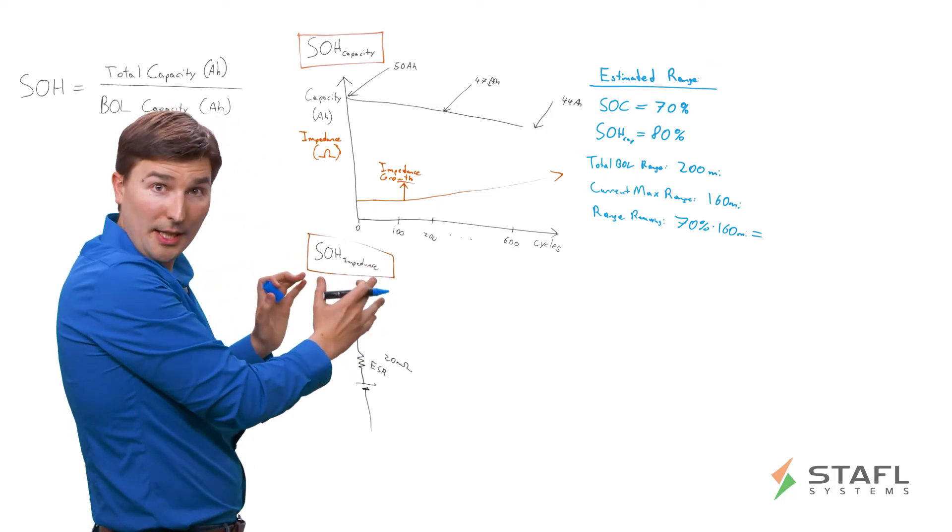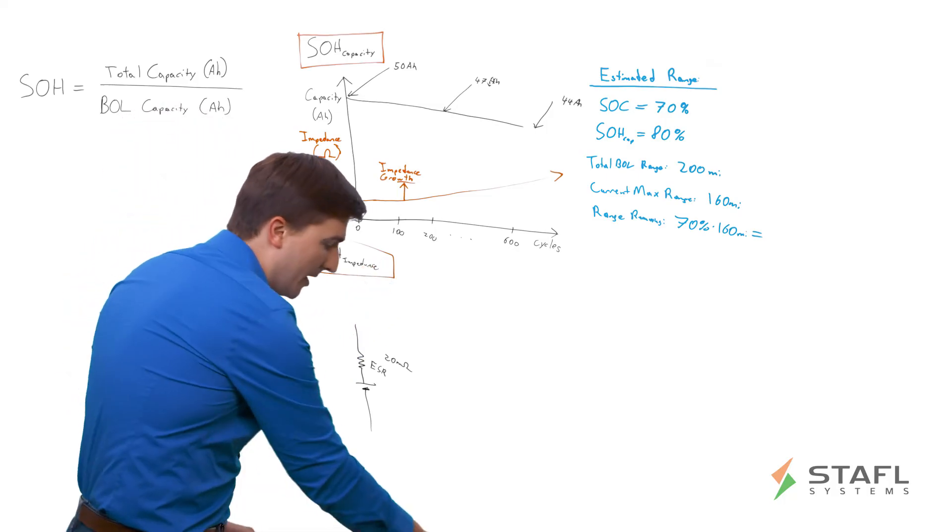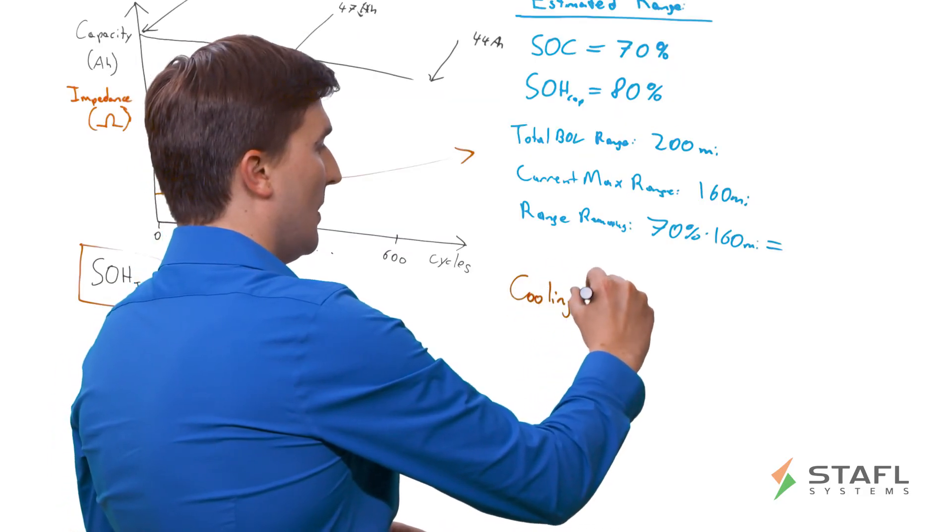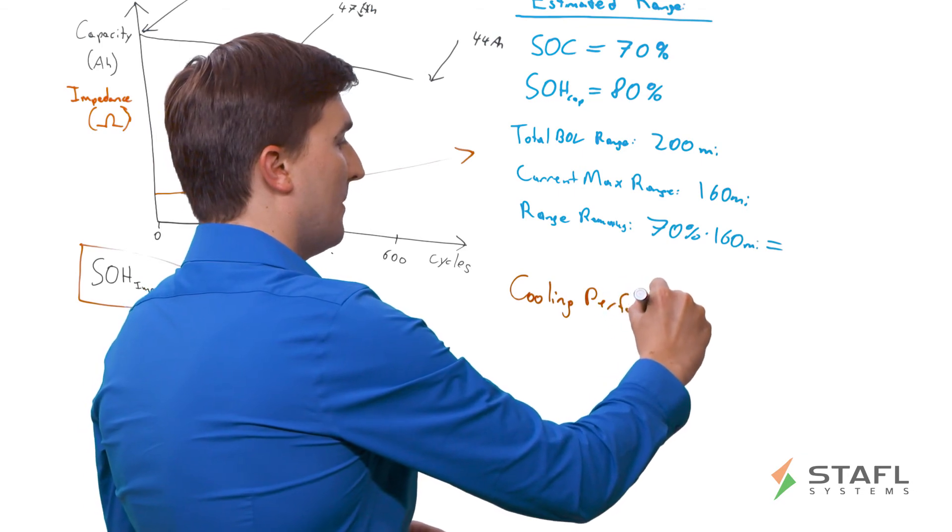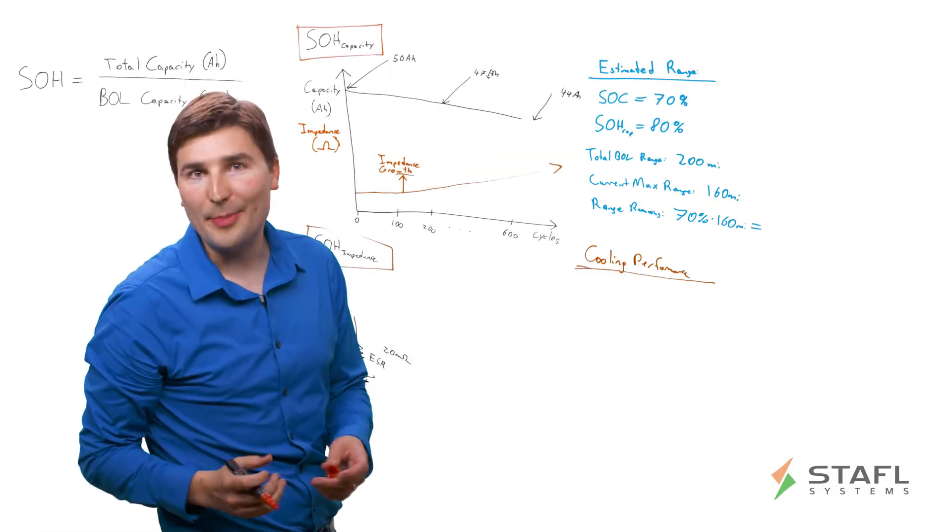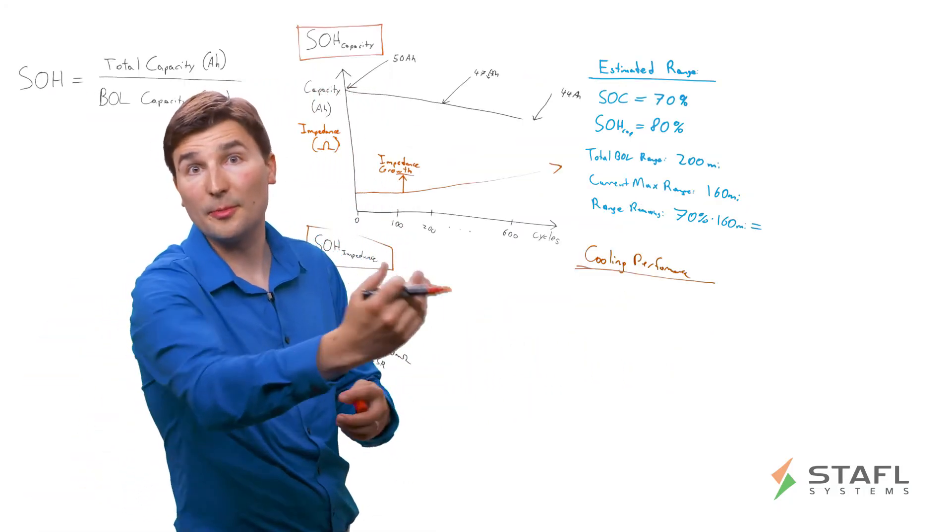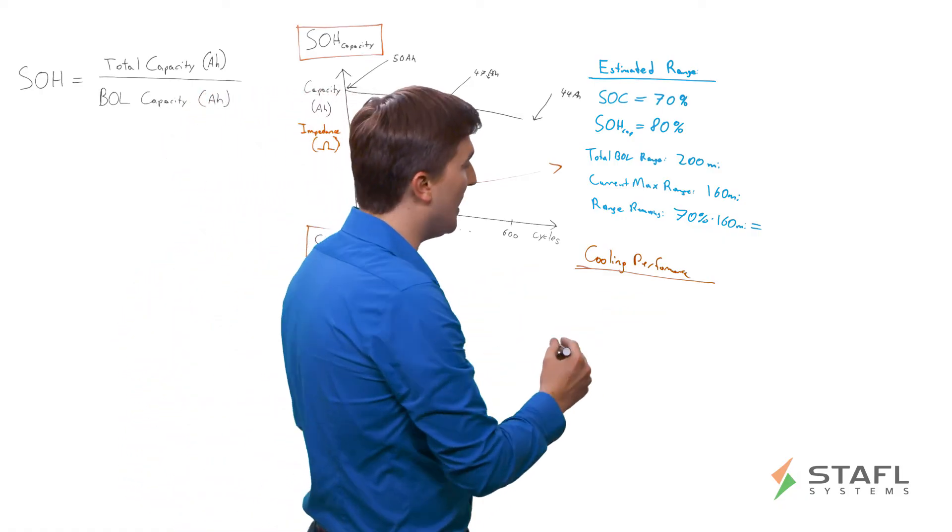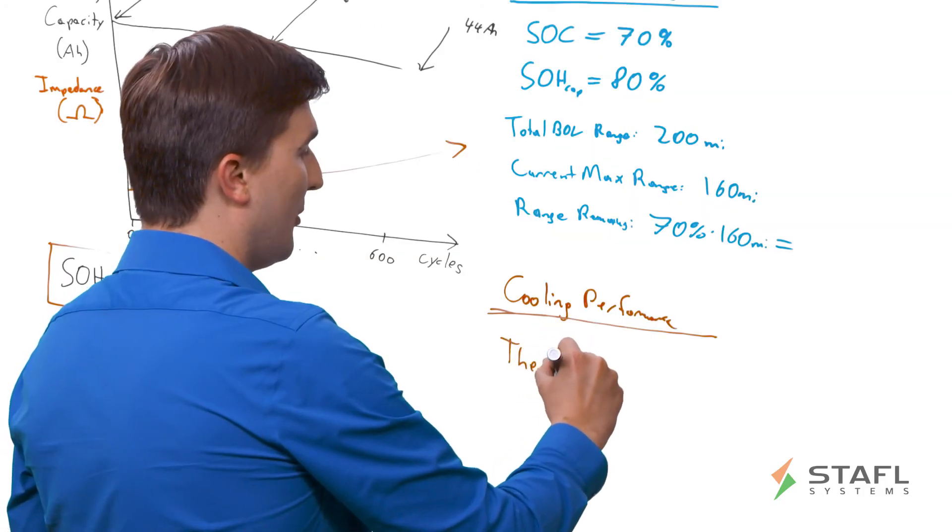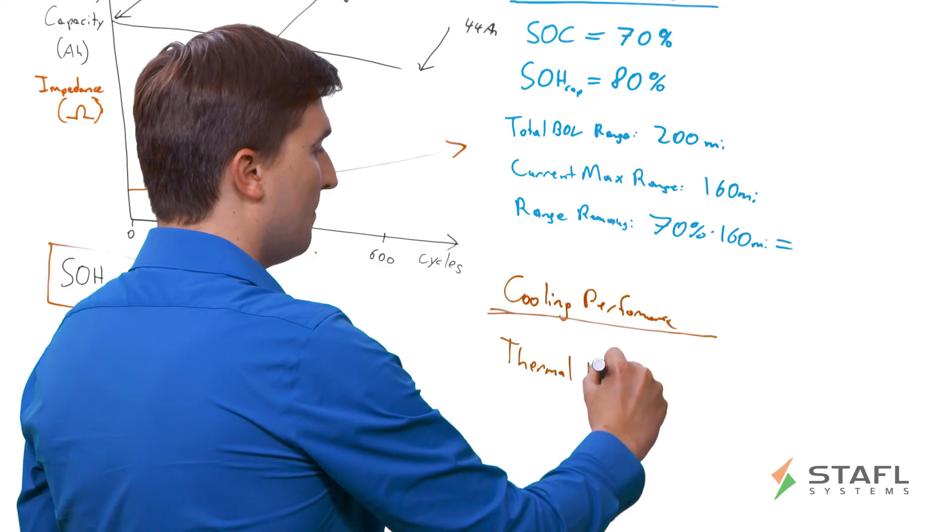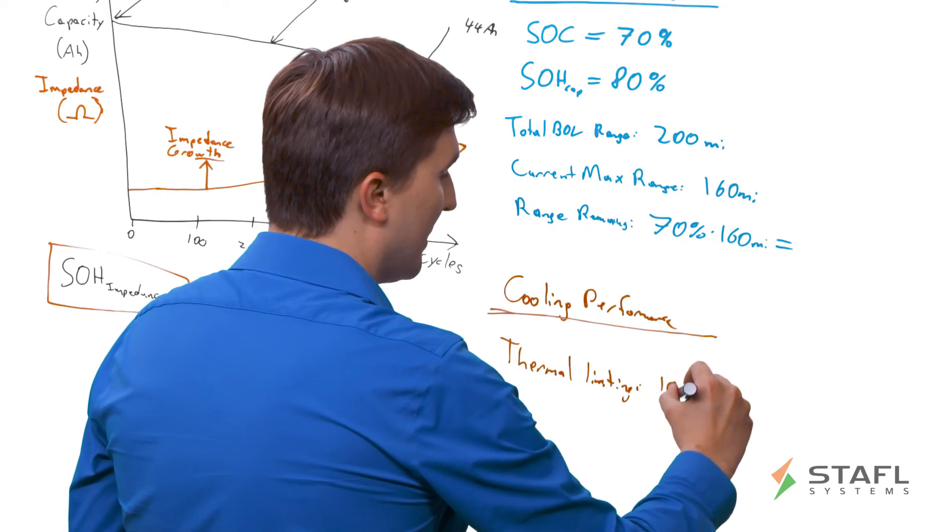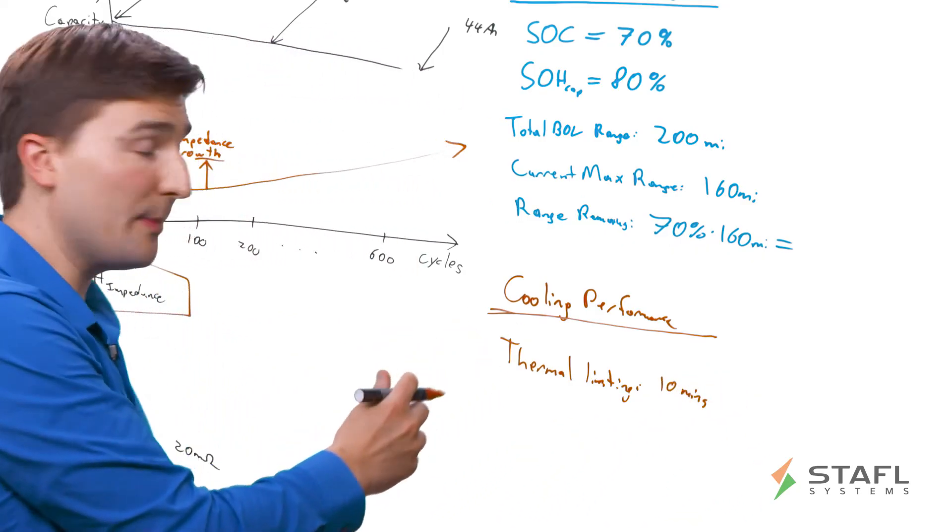And then going to SOH impedance, why is that so important? Well, if you can imagine that the cooling performance of your vehicle is a limiting factor. For example, say that you have a race electric vehicle that's high performance, and the battery thermals are one of the limiting factors that prevents you from going to the end of the race with the maximum speed. Well, now you might have thermal limiting, say that at the beginning of life, you had thermal limiting that occurred, say that happened 10 minutes into a race. That would be at the beginning of life.